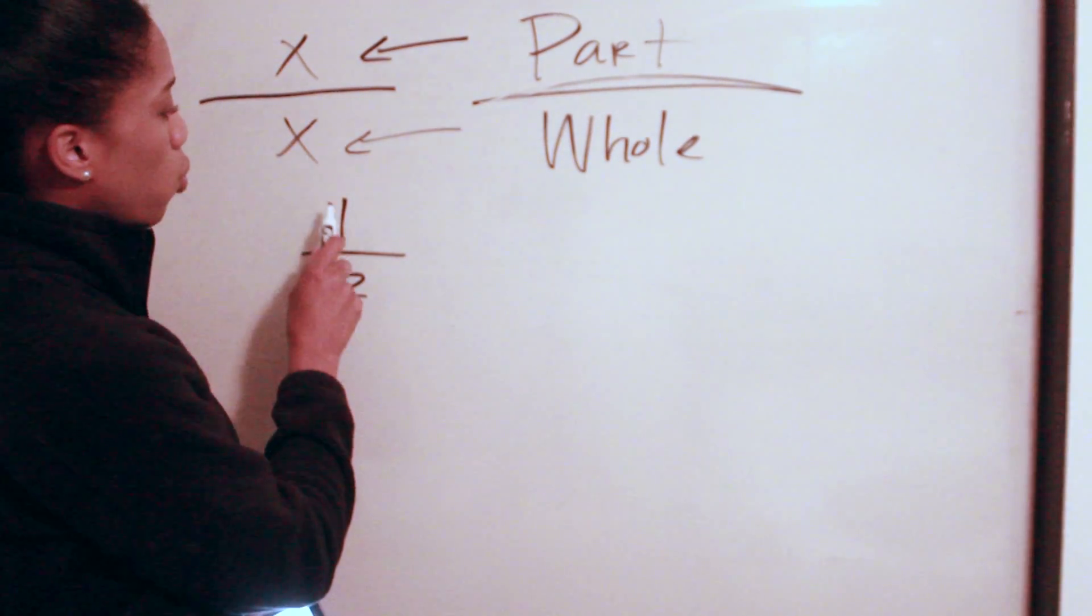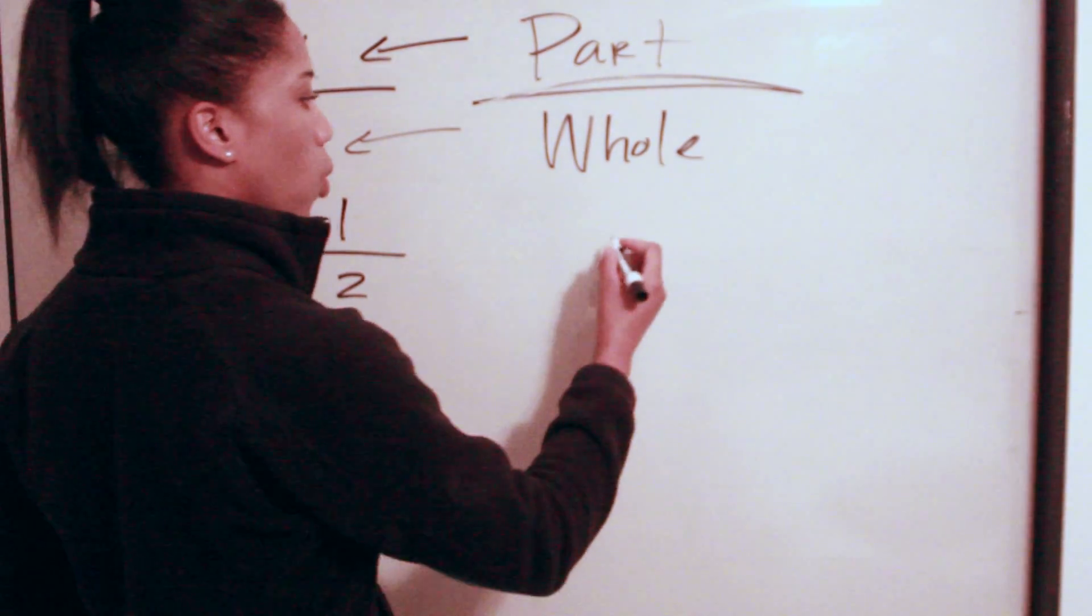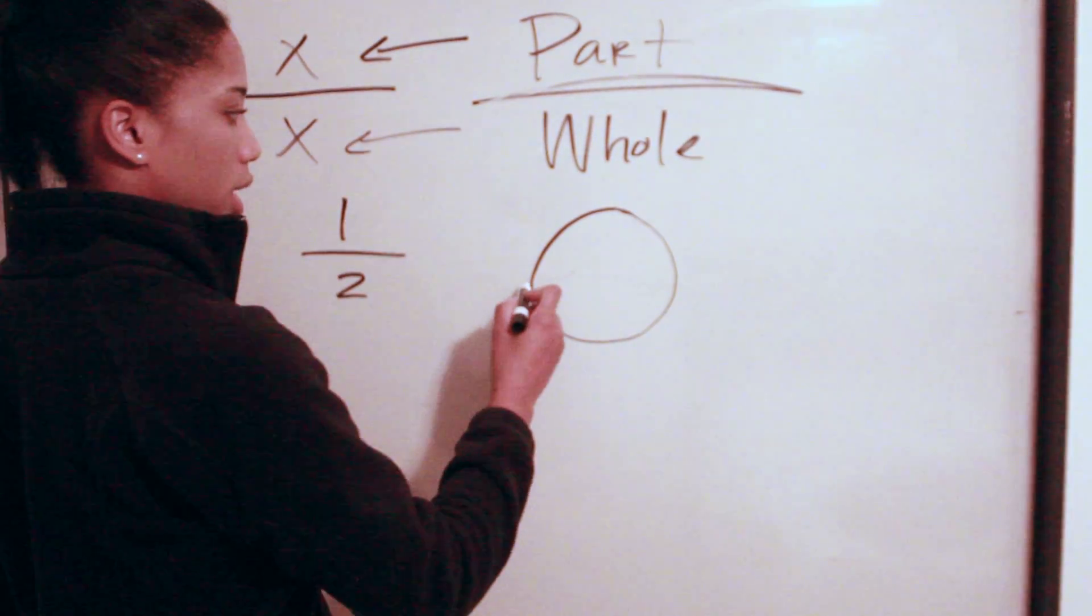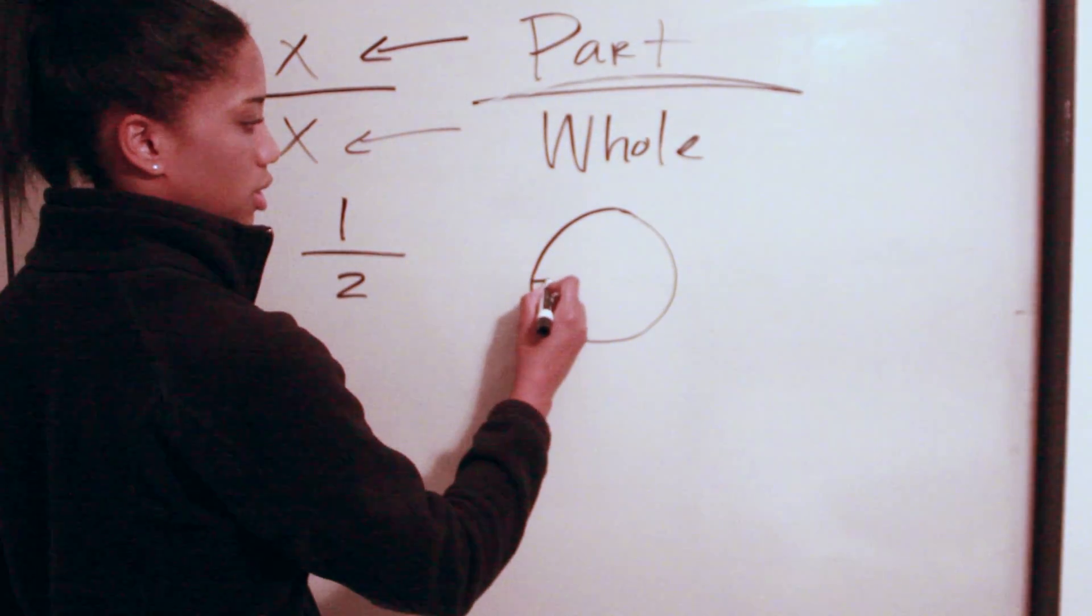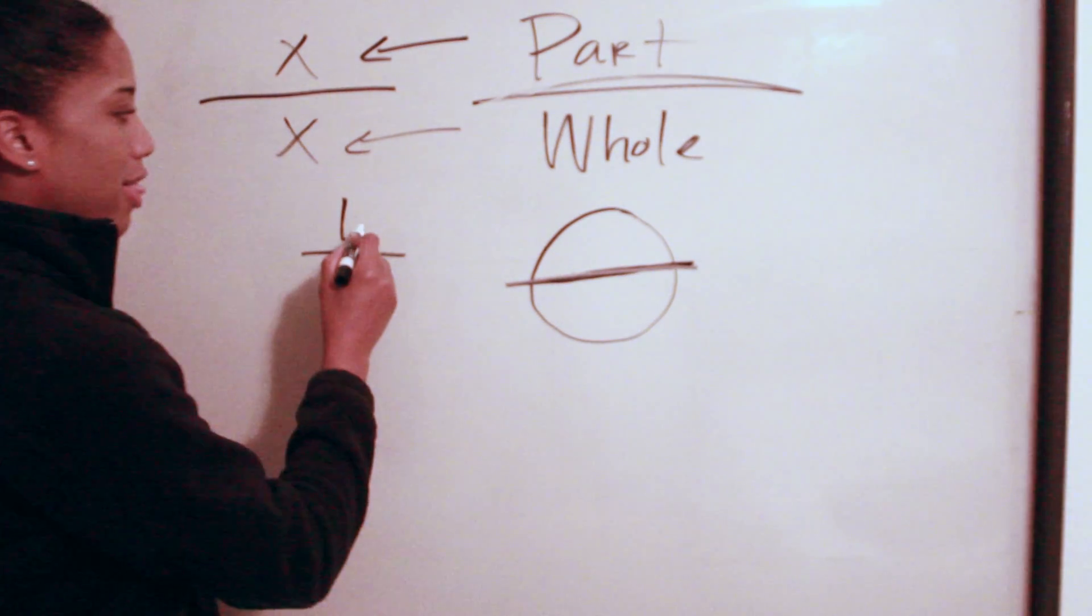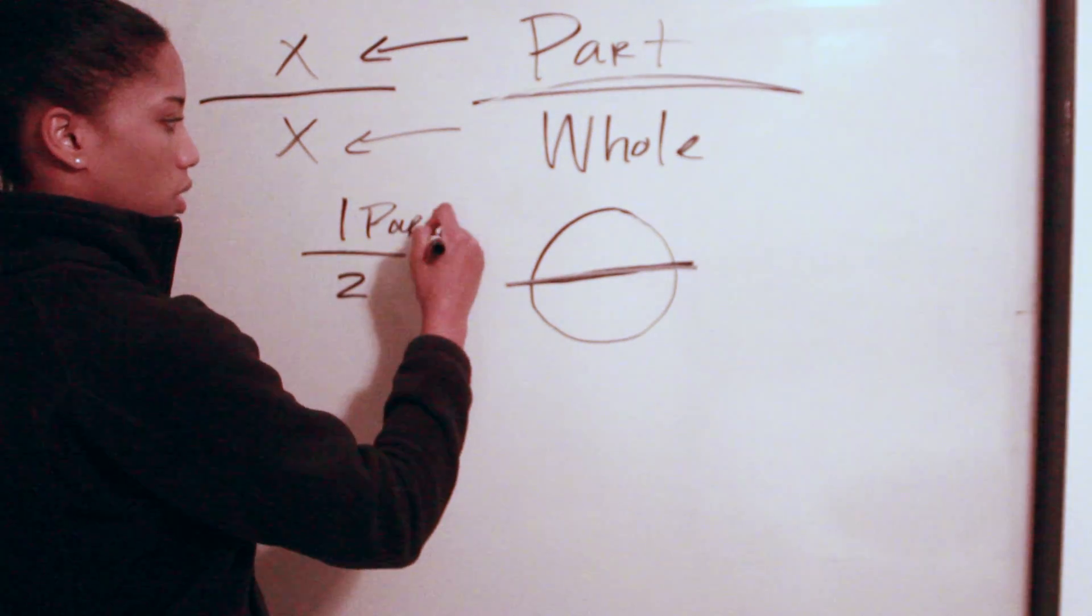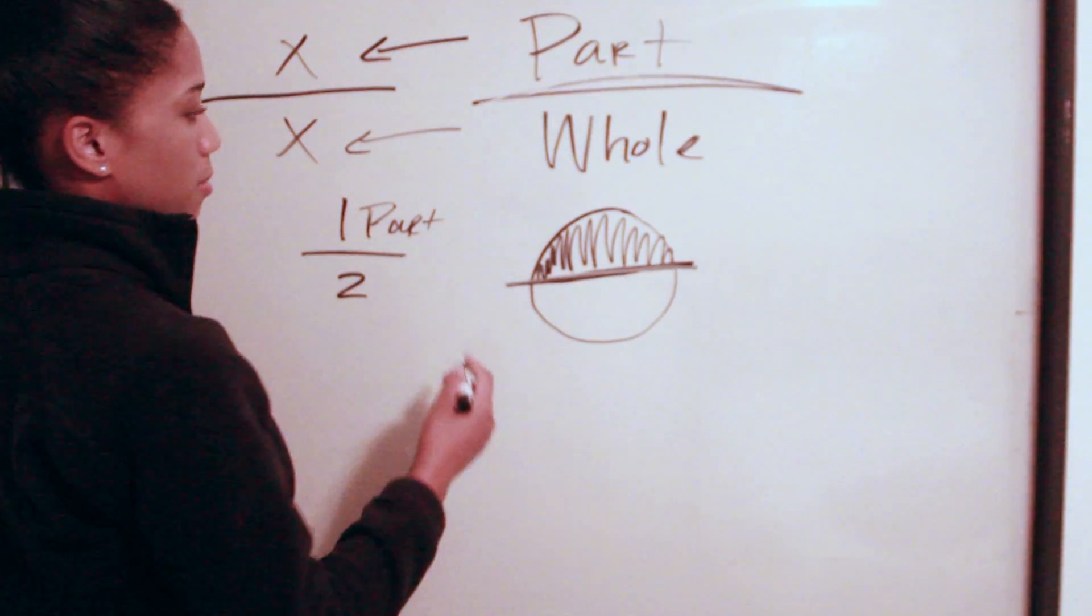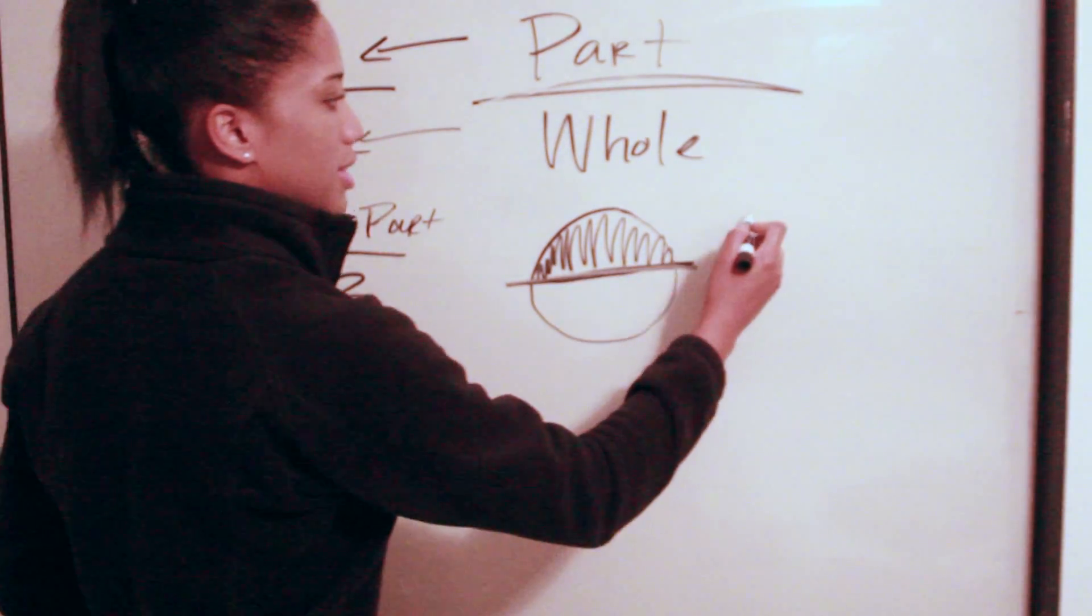So if I have one whole pill of amoxicillin, this is the whole. Now we're going to divide this into two segments here. This whole is divided into two segments and the one will represent part of these two segments, so we would highlight this part.